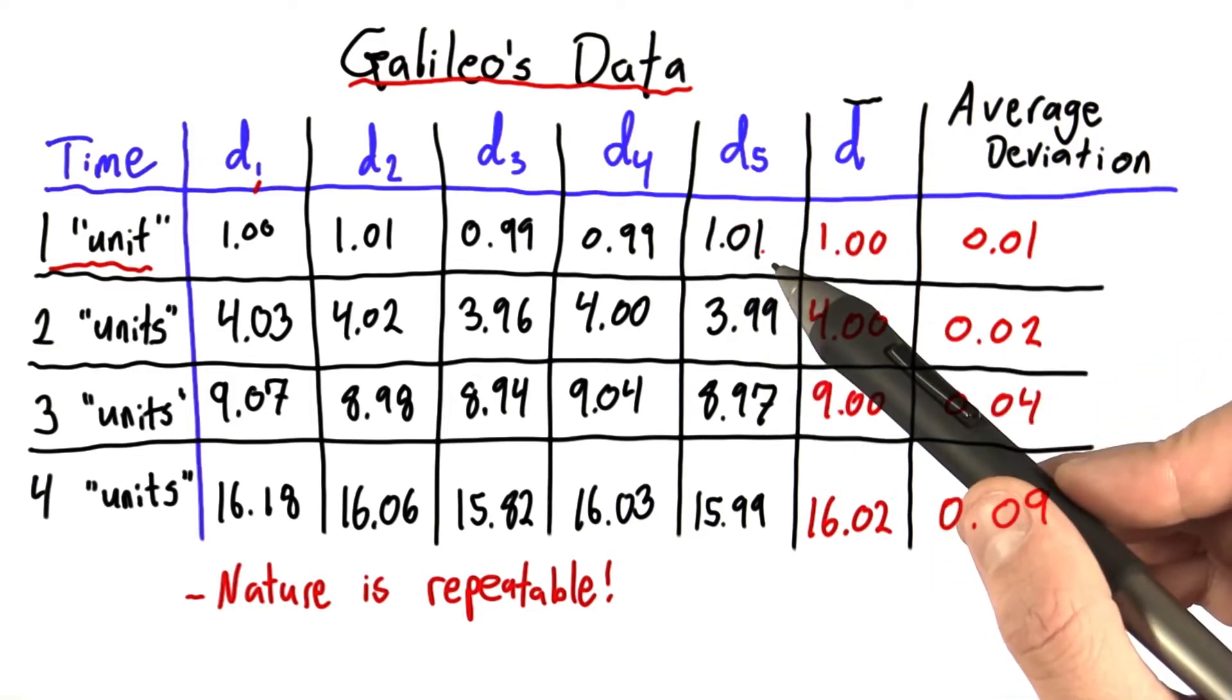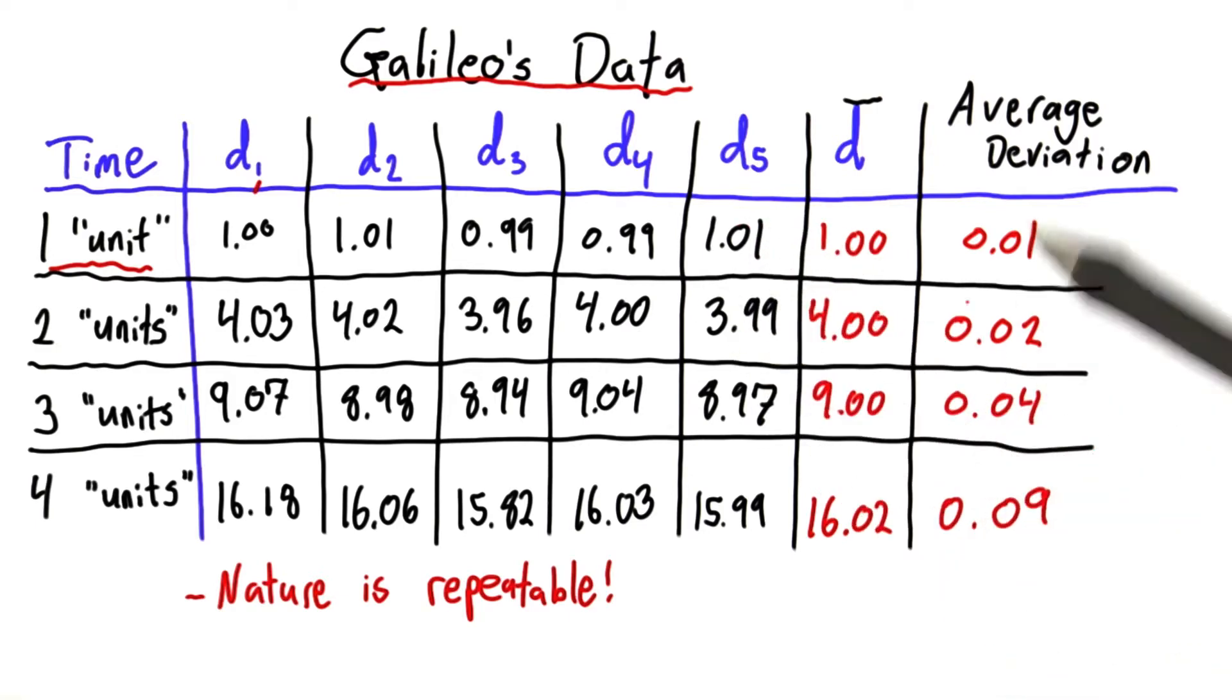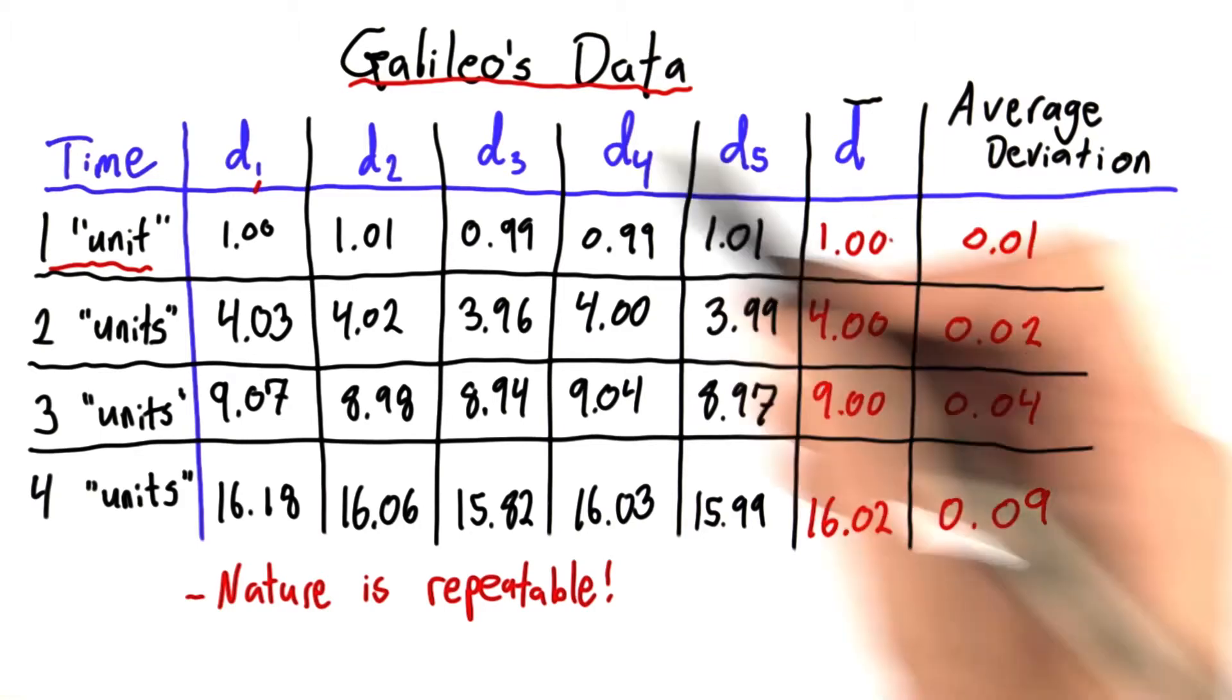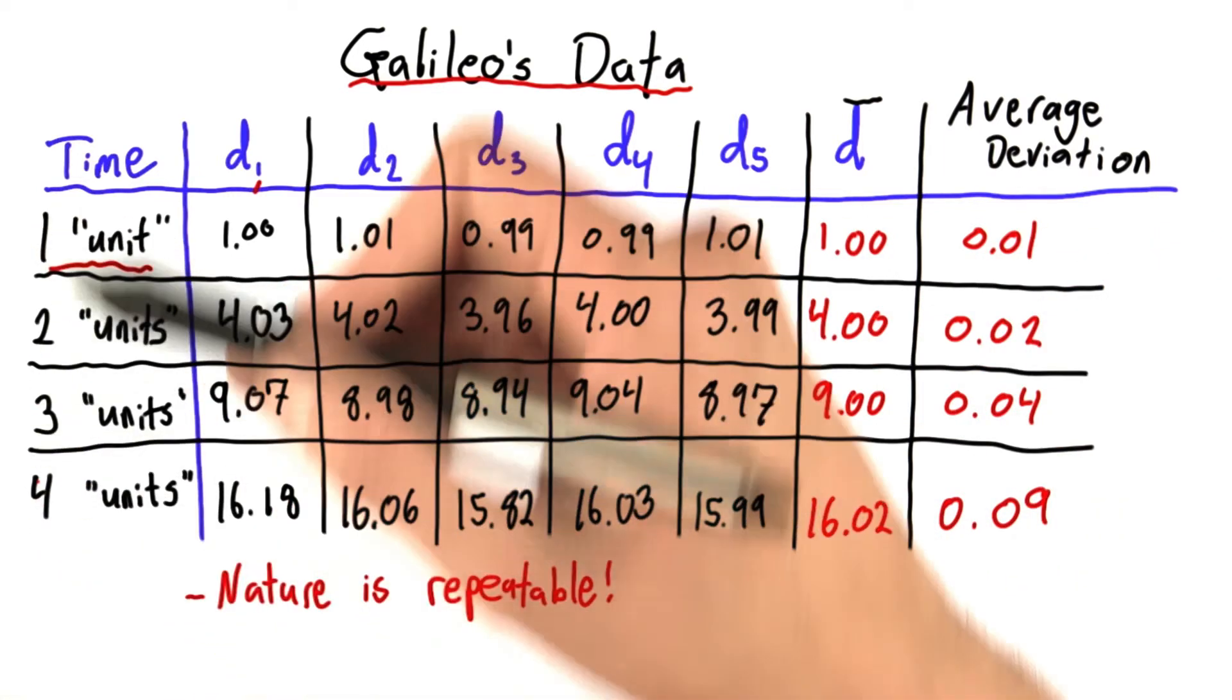And to quantify the error on our end, how good we are at making these observations, we've calculated this average deviation. What this average deviation tells us is that for each of these trials, each of these four different experiments,